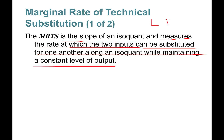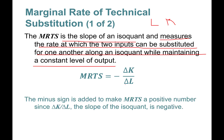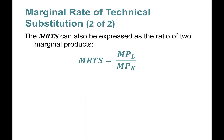This is labor and capital substitution. The marginal rate of technical substitution is written with a negative sign — negative of delta K over delta L — because delta K over delta L is already negative, and we want the MRTS to be a positive number. The MRTS can also be expressed as the ratio of the marginal product of labor divided by the marginal product of capital.